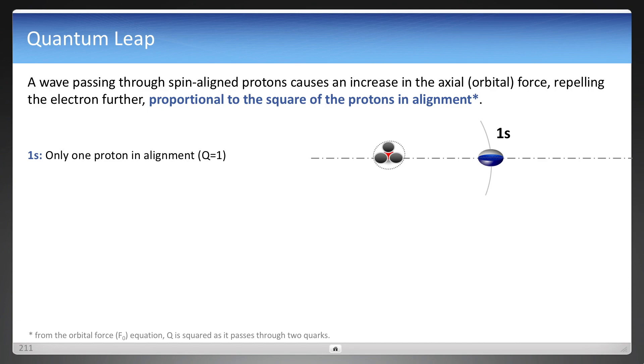And so expanding that out further now, you can see the alignment of only one proton, same spin proton, that electron is in the 1s orbital. And this was calculated in orbitals for the square of the orbital force being the square of the number of protons in that alignment, because it passes through multiple quarks, two quarks.